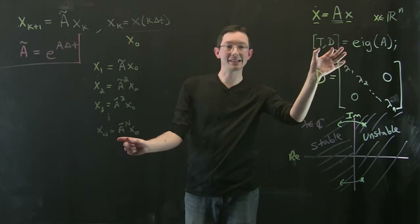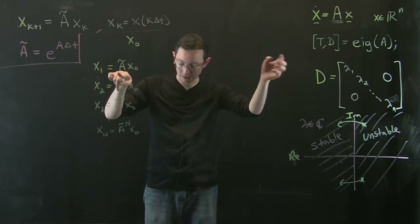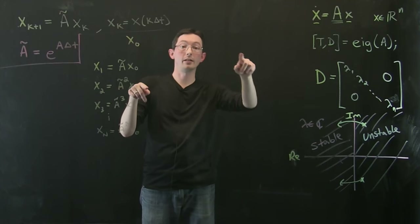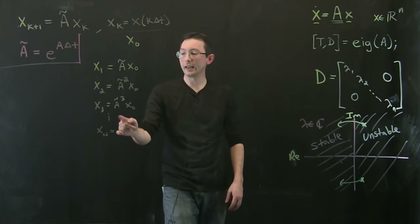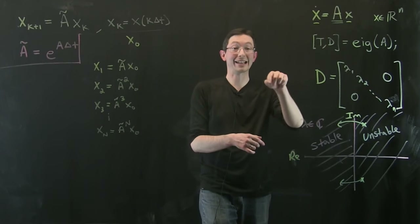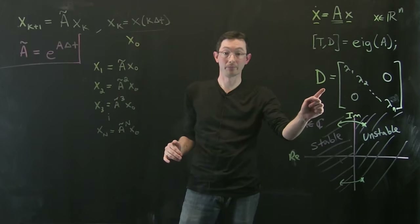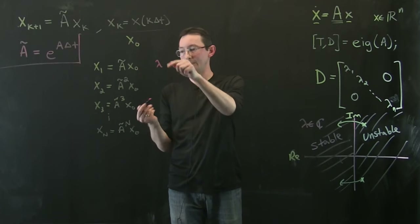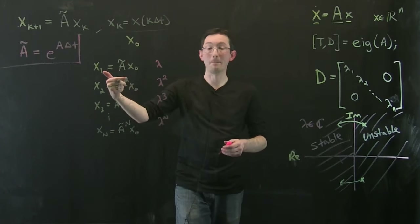Using the eigenvector-eigenvalue relationship — Ã = T⁻¹·D·T — we get Ã^n = T⁻¹·D^n·T. The only thing that gets raised to increasing powers is this diagonal matrix D. So if we follow what happens to an eigenvalue λ as we raise it to the nth power — λ, λ², λ³, ..., λⁿ — it's actually the radius of this eigenvalue in the complex plane that either grows or decays.